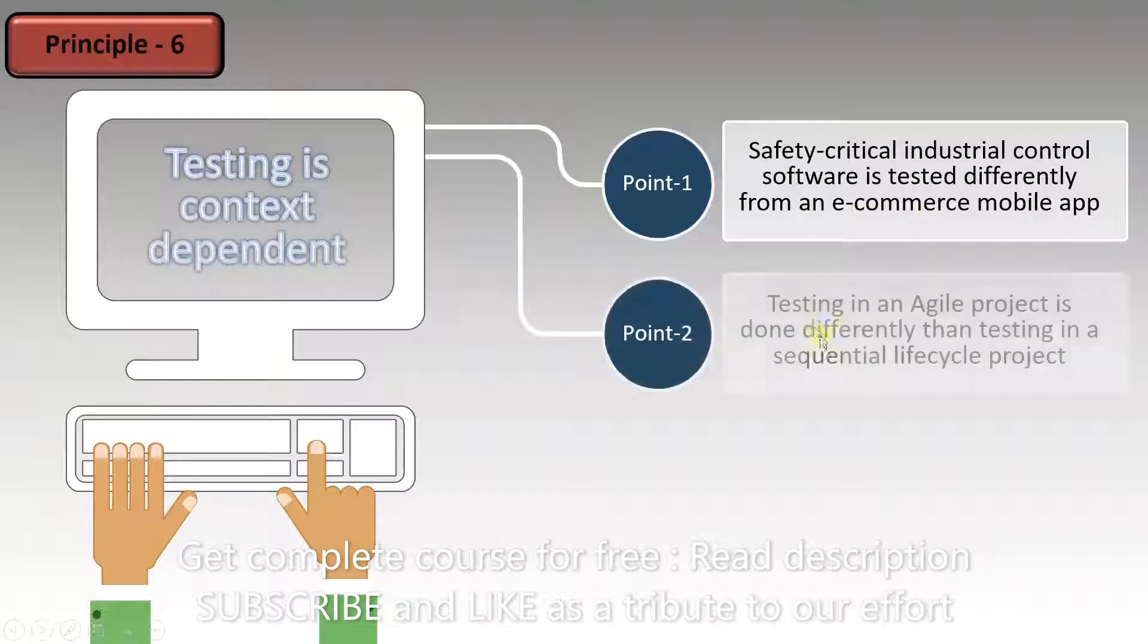Point 2: Testing in an agile project is done differently than testing in a sequential lifecycle project. Our methods of testing in an agile project are completely different from how we test in a sequential lifecycle project. This lecture is all about sequential lifecycle projects.